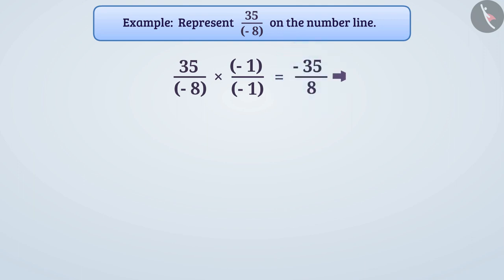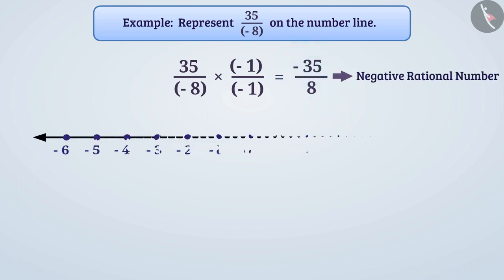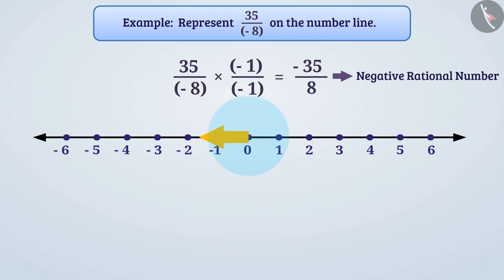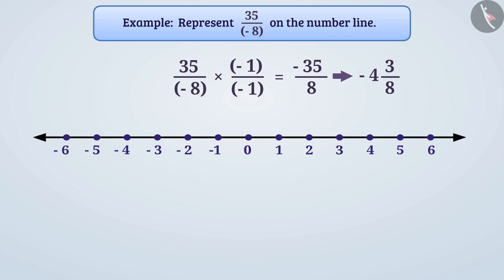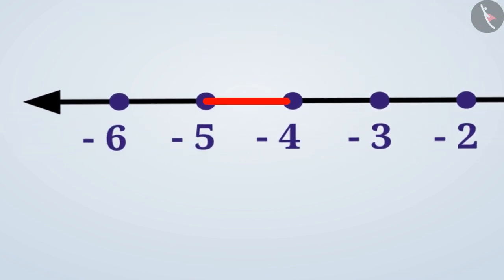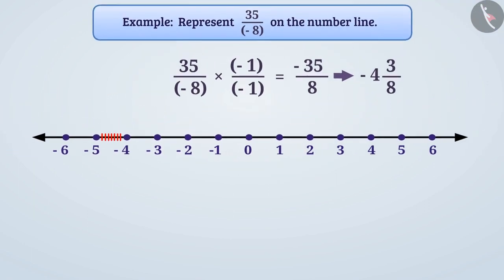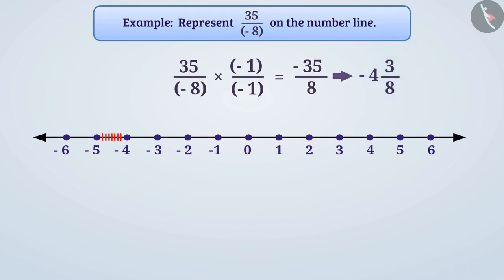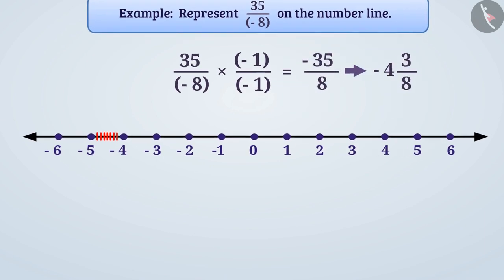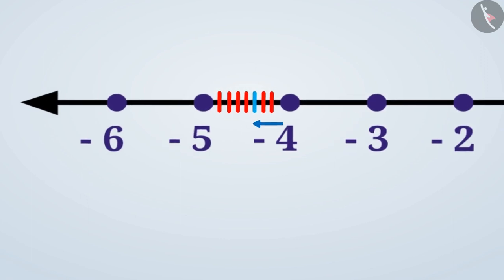Minus 35 by 8 is a negative rational number, so its position is to the left of 0. We can write minus 35 by 8 as minus 4 and 3 by 8. This shows us that the position of the given rational number is between minus 4 and minus 5. To find the exact location, we divide the unit distance between minus 4 and minus 5 into 8 equal parts. We denote minus 4 and 3 by 8, which is minus 35 by 8, by taking 3 parts out of these 8 parts.